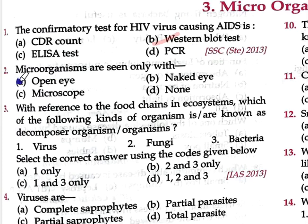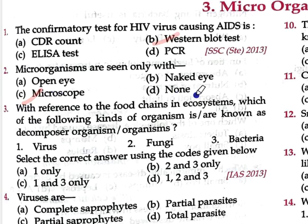Question number two: Micro organisms are seen only with — Option A: Open eye, Option B: Naked eye, Option C: Microscope, Option D: None. The correct answer is Microscope. We cannot see micro organisms with the open eye or naked eye; only with the help of a microscope can we see micro organisms like bacteria and viruses.